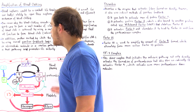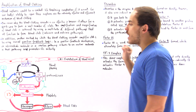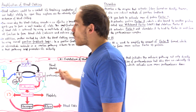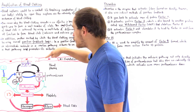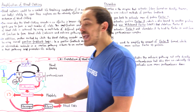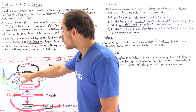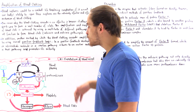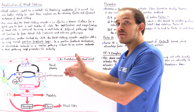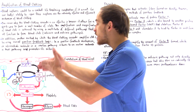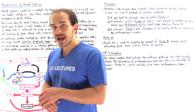Recall that this is our blood clotting cascade. Our extrinsic pathway is shown with the black arrows. The intrinsic pathway is shown with the blue arrows, and when these two pathways converge, they form the final common pathway, which is shown in red.